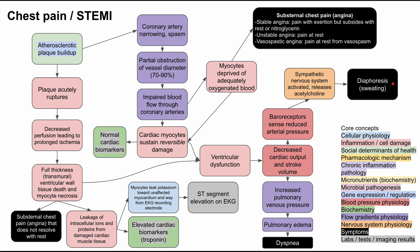This diagram covers the main lab values we see — elevated troponin and elevated cardiac biomarkers — as well as the ST segment elevation on EKG, and common symptoms like angina, diaphoresis, and dyspnea during an ST elevated myocardial infarction. I hope this mechanism of disease was helpful, and thank you for listening.